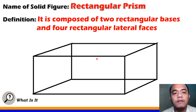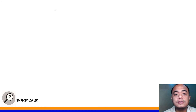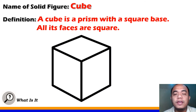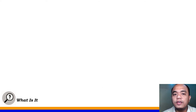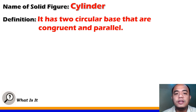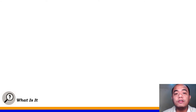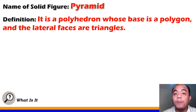This is an example of a rectangular prism. The next solid figure is the cube — a cube is a prism with a square base, and all its faces are square. The next solid figure is the cylinder — cylinder has two circular bases that are congruent and parallel. The next solid figure is the pyramid — it is a polyhedron whose base is a polygon, and the lateral faces are triangles.